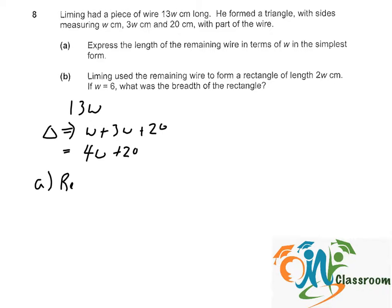what is remaining? It will be just 13W minus 4W minus 20. That will give us 9W minus 20 cm.